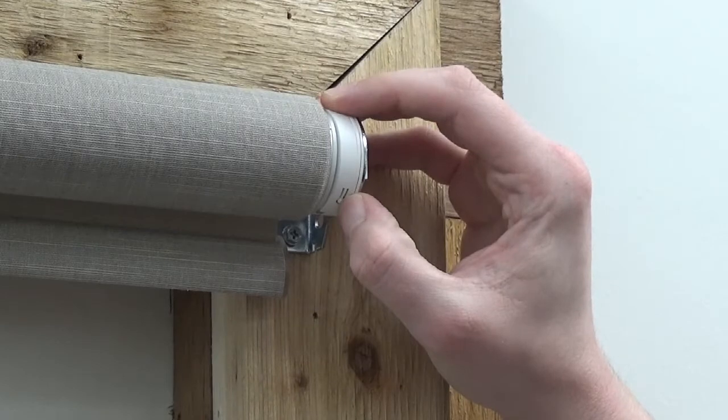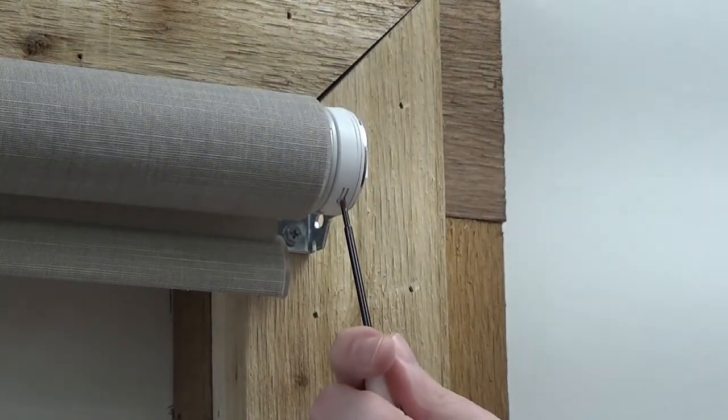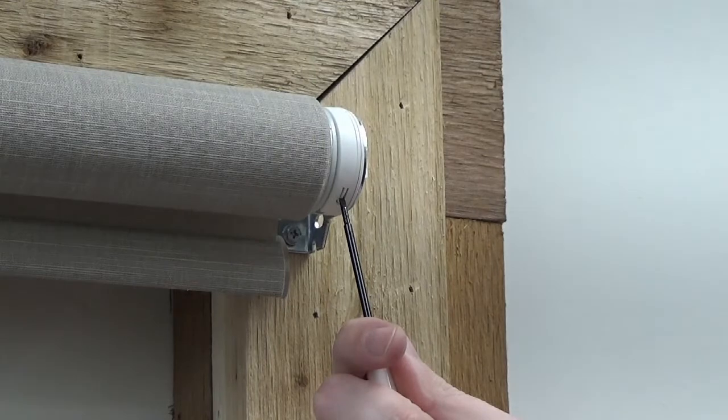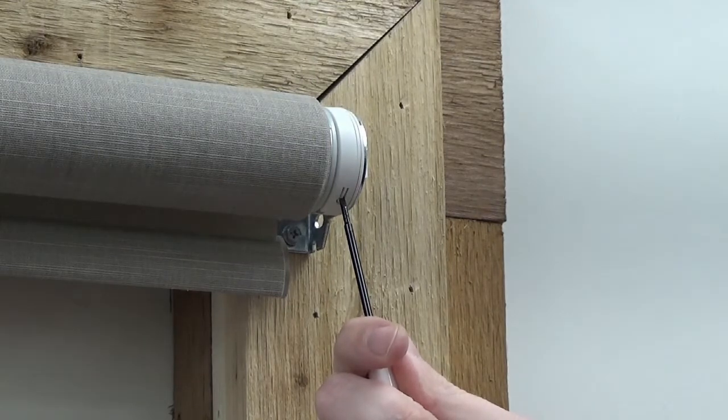On a tubular motor, the P1 button will be on the motor head. If you cannot press the button with your finger, something small like a thin screwdriver will work.